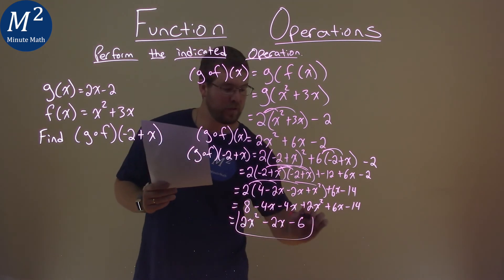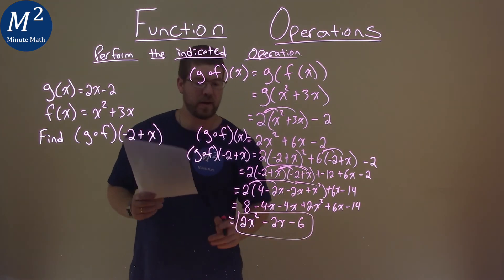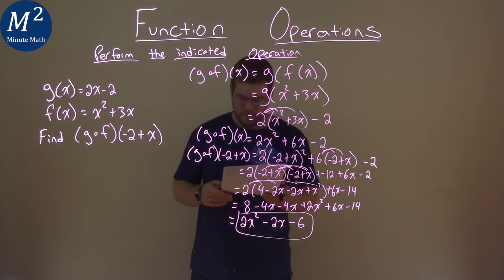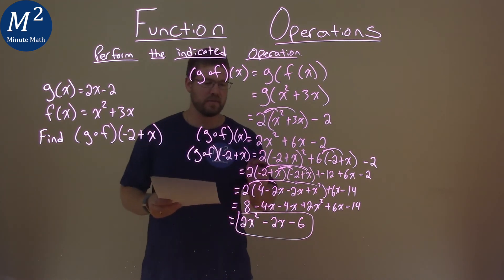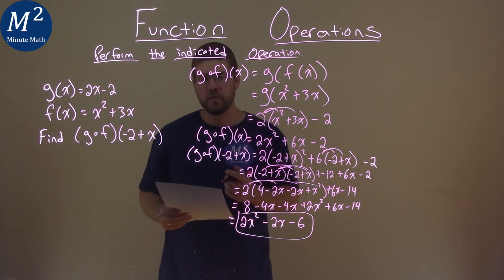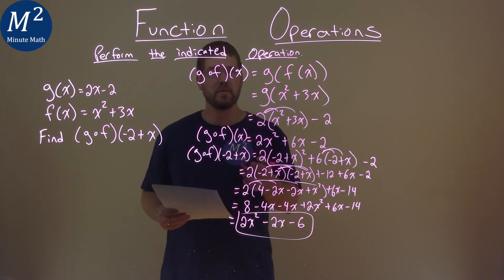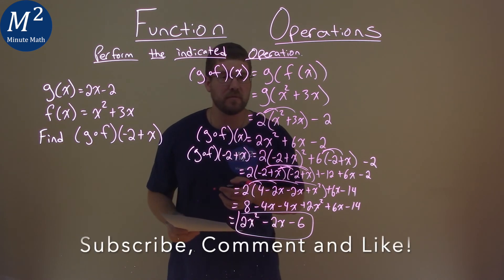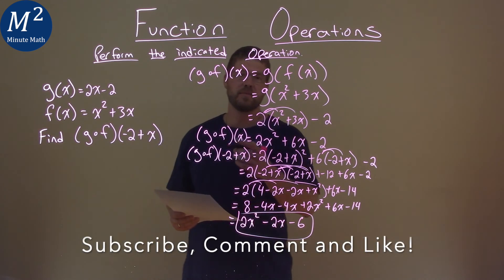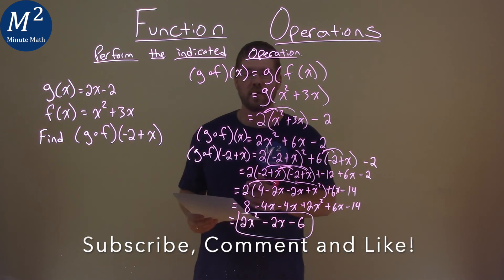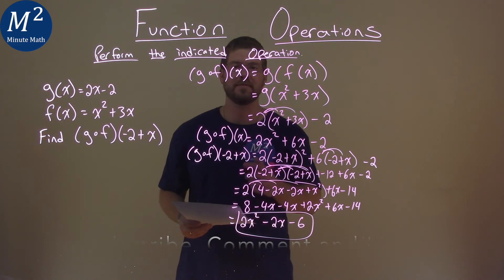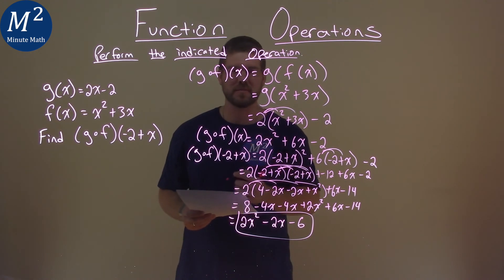And so after all of that, our final answer is 2x squared minus 2x minus 6. I hope this video was helpful for you. And if it was, please subscribe to this YouTube channel and like this video. This helps us make more free math lessons for you and for everyone else. So as always, thanks for watching.